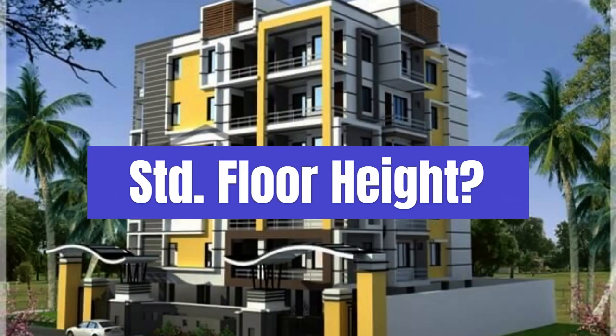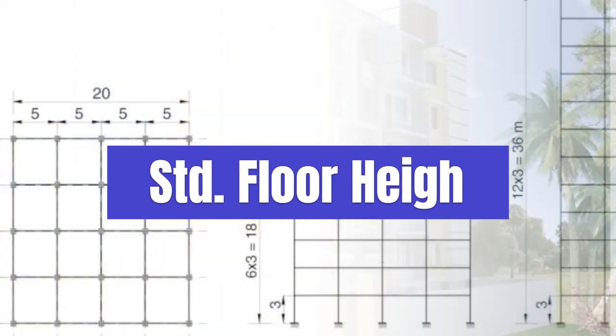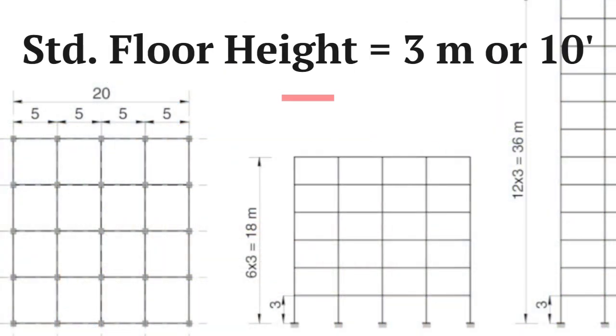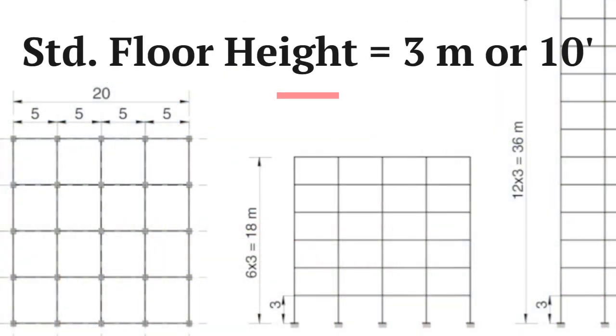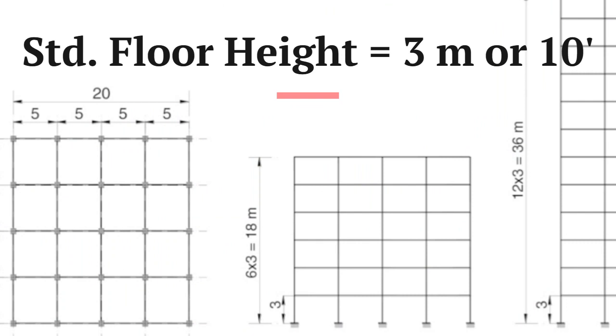Question 5. In a multi-story building, what is the standard height of each floor? Answer: The standard height of each floor of a multi-story building is 3 meters or 10 feet.